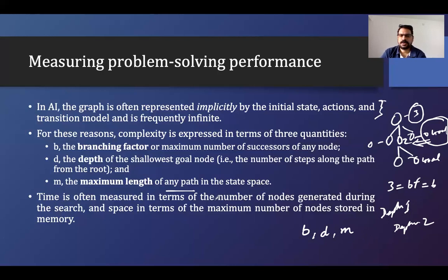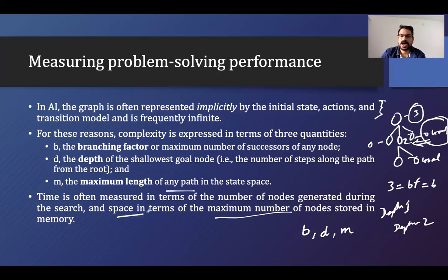Time is often measured in terms of the number of nodes generated during the search. So time complexity looks at how many nodes we have generated during the search. Space is measured in terms of the maximum number of nodes stored in memory at any one time. How many nodes we are storing at a particular time — that maximum number of nodes represents our space complexity, or the space taken.